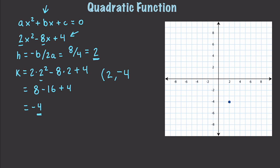Now all we need to do is find one other point. We can plug 0 into the equation, which gives us a value of 4. So we plot that point. And because we know this is symmetric, we also know that there is going to be a corresponding point on the other side. Then we can just draw in our parabola. That is how we can perform two calculations and draw a really close approximation of a quadratic equation.